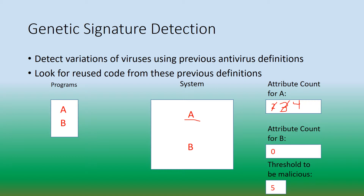Turning to program B, it turns out to have code reuse from a previous program we have seen before, and that this code creates and executes files on your system. The system determines this is a negative attribute, so we increment the attribute count for program B. We're keeping track of the number of attributes for each program, and if either of these programs have at least five attributes, we will determine that it is malicious.